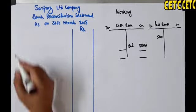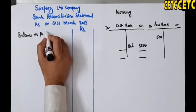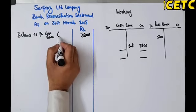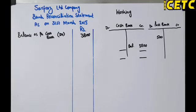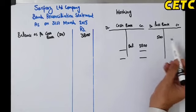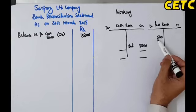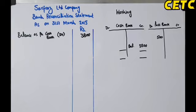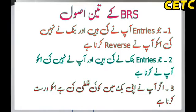Now we start the question. First, write: Balance as per cash book — Rs. 3800 (debit balance). If nothing is specified, treat the cash book or bank book balance as favorable, which means debit. The bank debited Rs. 500, which should have been credited in our cash book but wasn't. Our rule for bank reconciliation is: whatever work we have done that the other party hasn't, we reverse our entry; and whatever the other party has done that we haven't, we do it now.